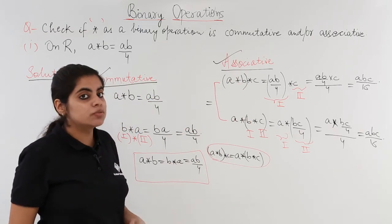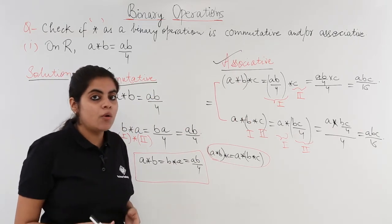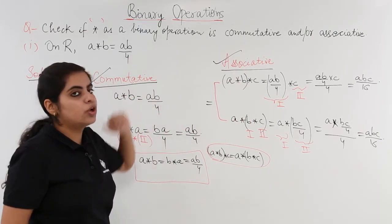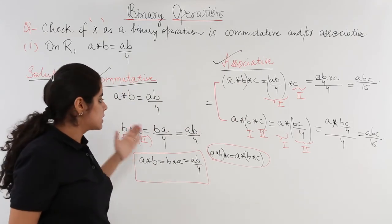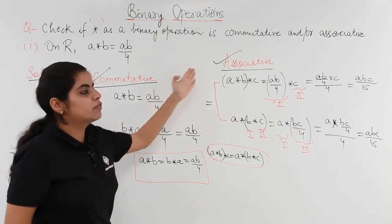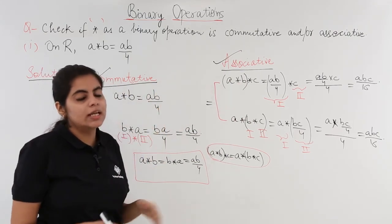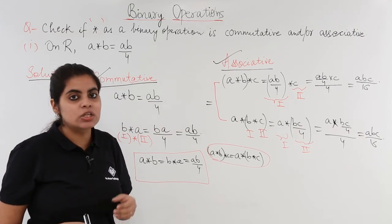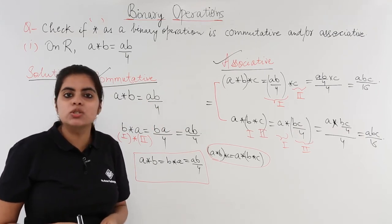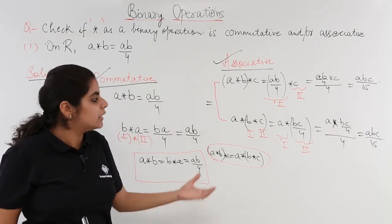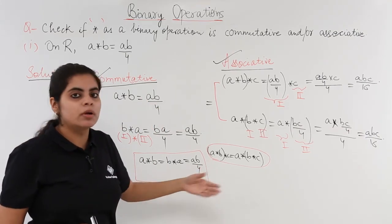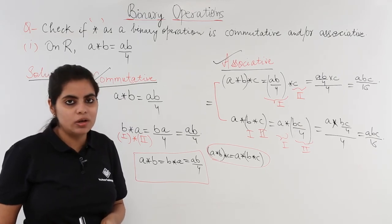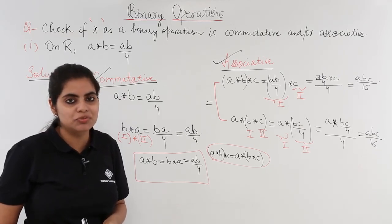Hence in this question we saw how to check whether a given binary operation is commutative or associative, or both, or neither. In the next question we would also be seeing a similar type of problem wherein we check whether it is commutative and/or associative.